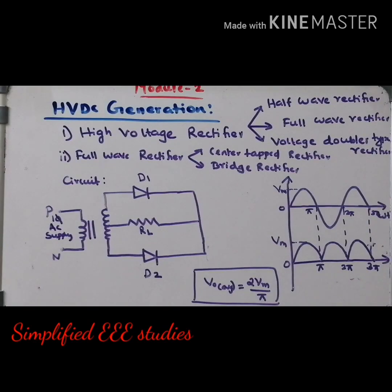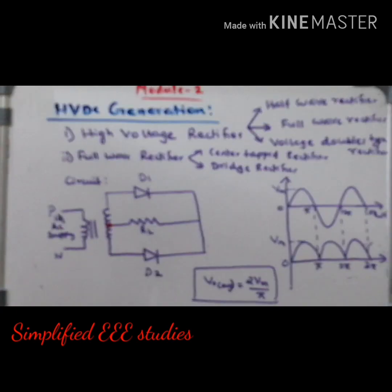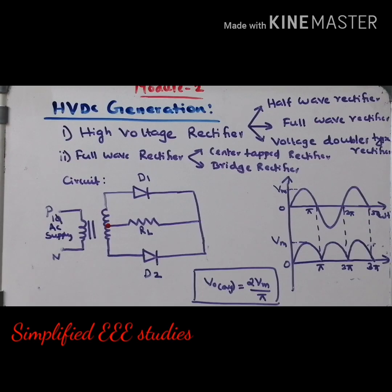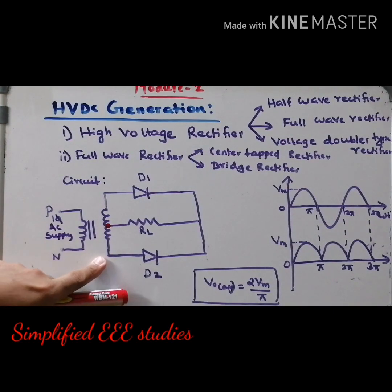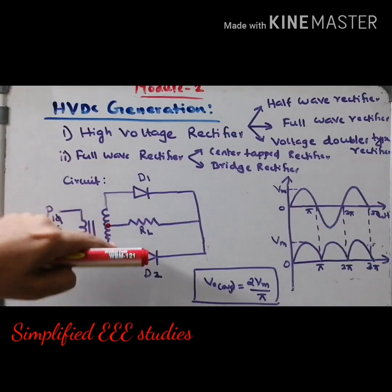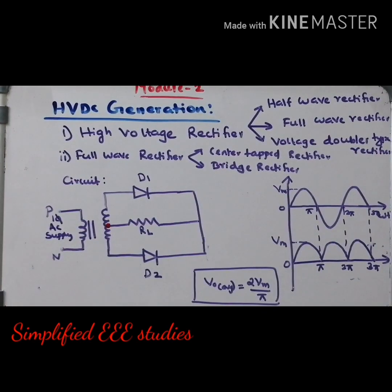Now let us see how the full-wave rectifier operates. In the half-wave rectifier case, it operates only during the positive half-cycle, so average output voltage is less. In the case of the full-wave rectifier, this is the circuit diagram. You can see diode D1 and D2, and there is a center-tapped transformer. There are two varieties of full-wave rectifier: center-tapped rectifier and bridge rectifier. I will be concentrating on the center-tapped rectifier. The input supply is provided by a step-up transformer, then D1, D2, and a load.